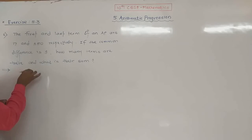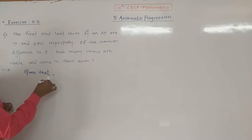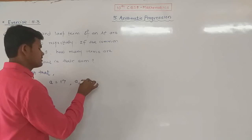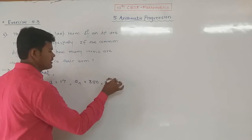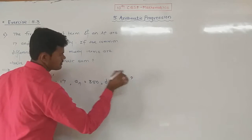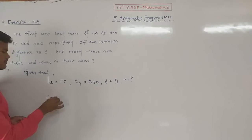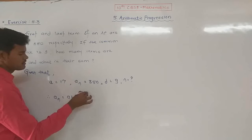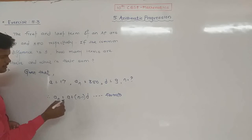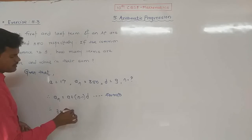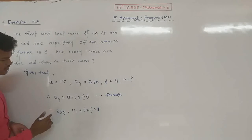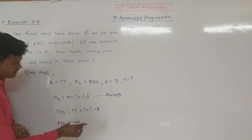Given: the first term A is 17, the last term AL is 350, and the common difference D is 9. We have to find the value of N. Using the formula A_N = A + (N−1)D, put all values: A_N = 350, A = 17, D = 9. So 350 = 17 + (N−1)×9. Moving 17 to the left: 350 minus 17, divided by 9, equals N minus 1.